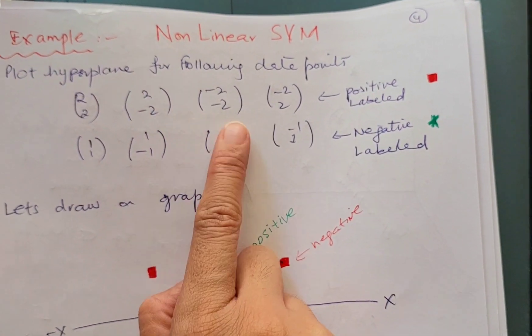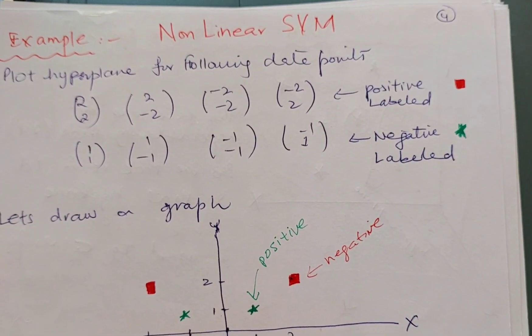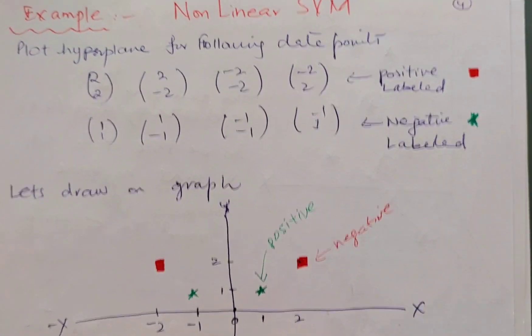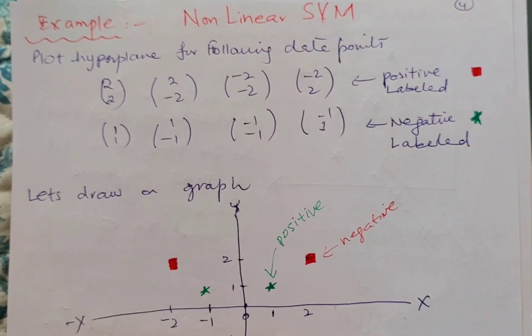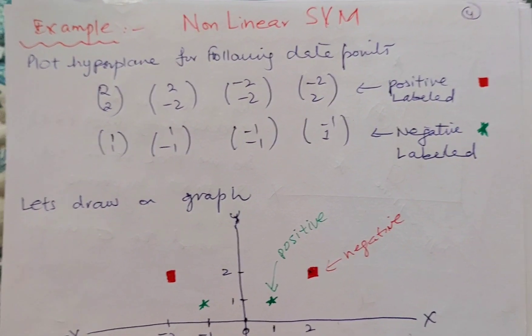We have positive labeled data and negative labeled data. Why do we have this positive or negative labeled data? Because we know that in SVM it is basically a supervised model, so of course the data which is given to you will be labeled data.